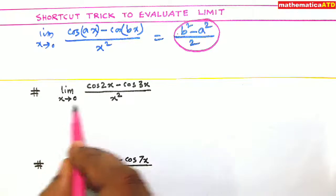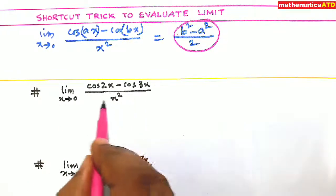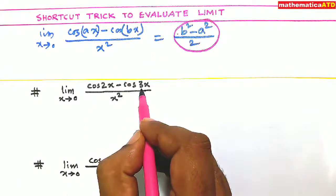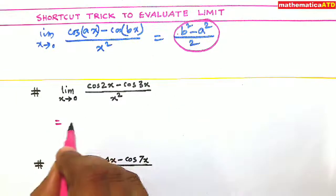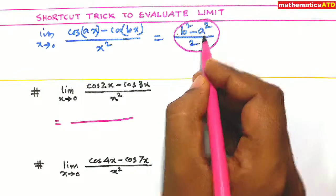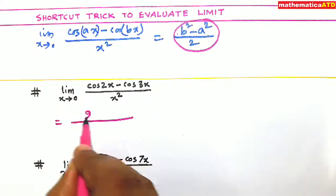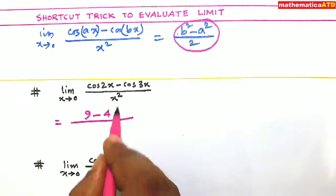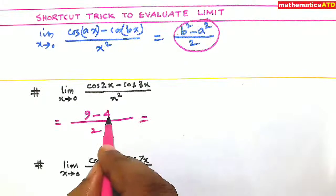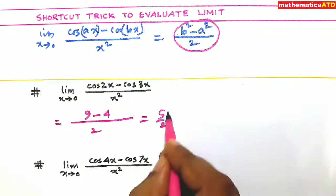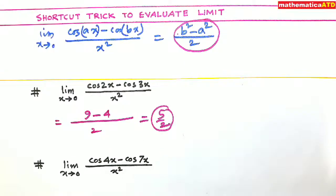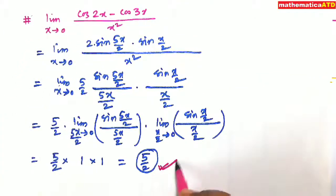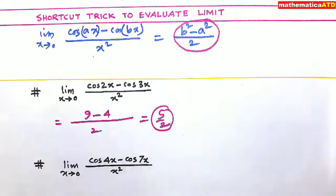What is given? Limit x tends to 0, cos 2x minus cos 3x upon x square. Here a is equal to 2 and b is equal to 3. So what will be the result? Very simple. b square minus a square upon 2. That means 3 square, 3 square means 9, minus a square. A square means 2 square, that is 4 upon 2. So the result is 9 minus 4 means 5 upon 2. You just see, you have completed this one in traditional method. This is 5 by 2. So these results are same.